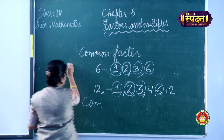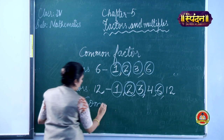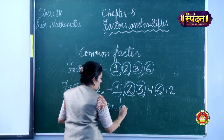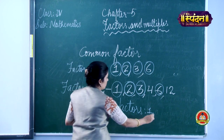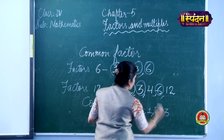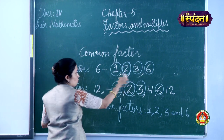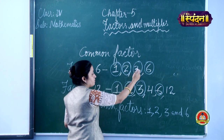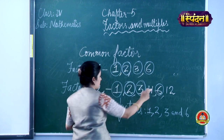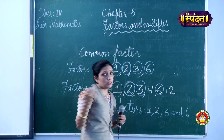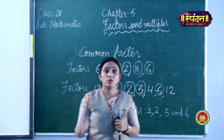So the common factors of 6 and 12 are 1, 2, 3, and 6. See: 1 and 1 match, 2 and 2 match (2×3=6, 2×6=12), 3 is in both (3×2=6, 3×4=12), and 6 is in both (6×1=6, 6×2=12). So the common factors are 1, 2, 3, and 6.